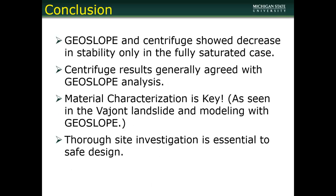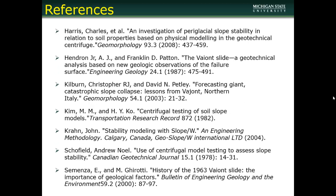The first conclusion was that we saw decreased slope stability only in the fully saturated case in both the software analysis and the centrifuge, and these results generally agreed with each other. We also have two overarching conclusions: first, material characterization is key — we saw this in the Vajont landslide when they misinterpreted the soils beneath the failure surface, and in GeoSlope where we didn't fully understand the strength parameters of our composite soil. A thorough site investigation is absolutely essential to any safe geotechnical design. We've provided references used in this experiment, and you can also contact us on LinkedIn or comment on this YouTube video for additional information.